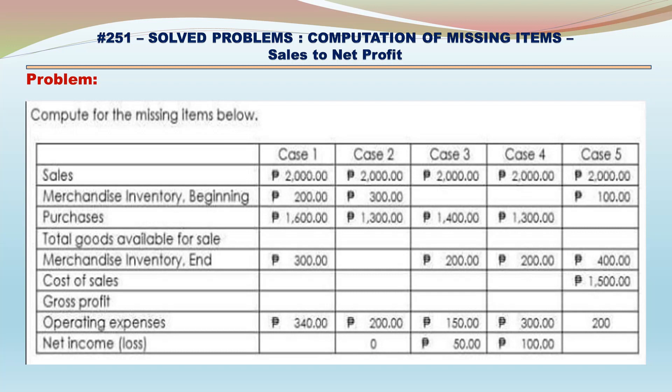Case 4: Sales – 2,000. Merchandise Inventory Beginning is missing. Purchases – 1,300. Total Goods Available for Sale is missing. Merchandise Inventory Ending – 200. Cost of Sales and Gross Profit are missing. Operating Expenses – 300. Net Income/Loss – 100.